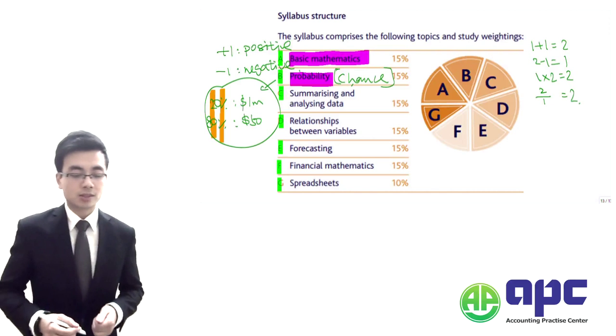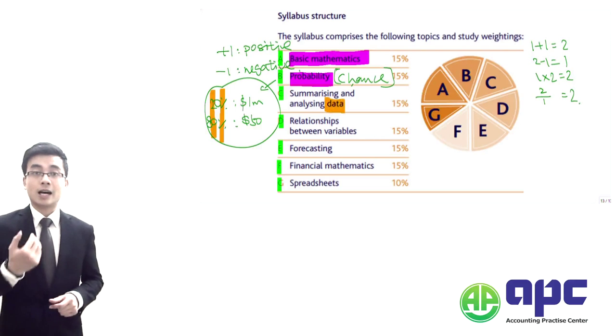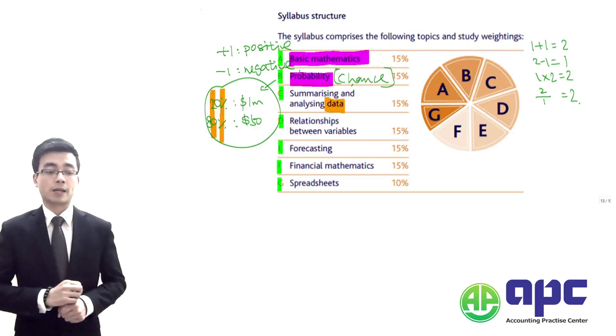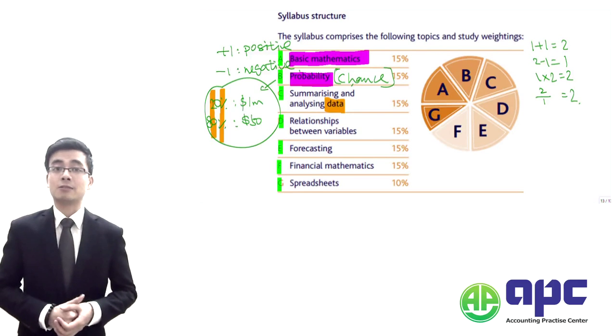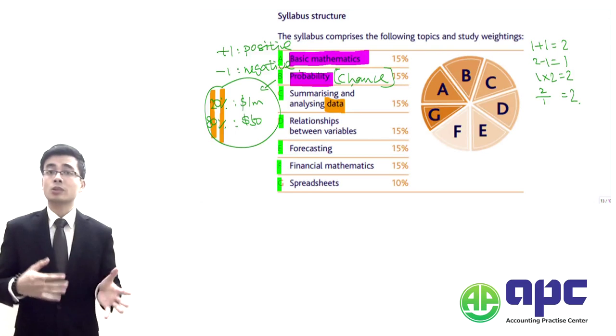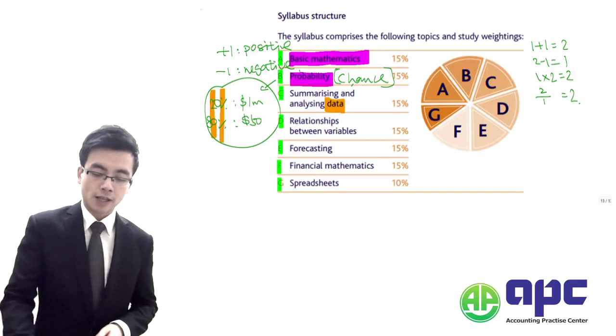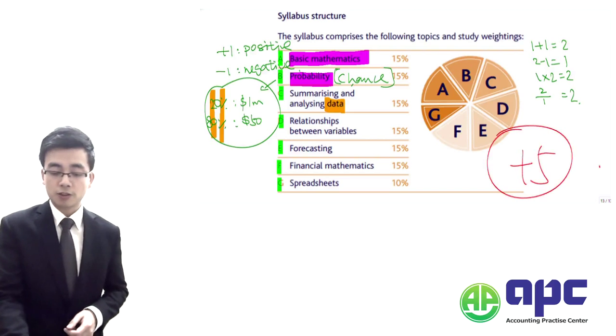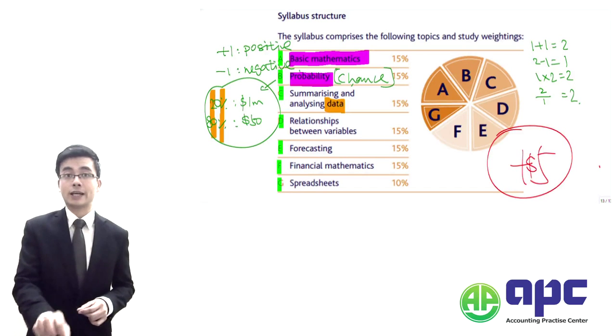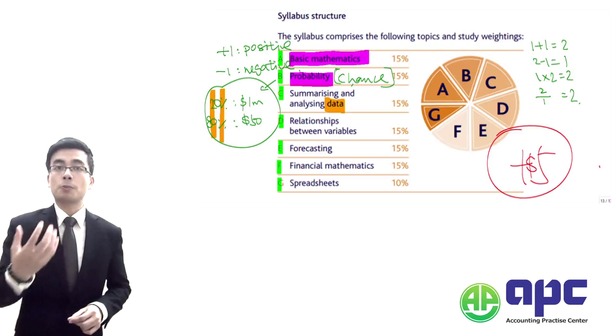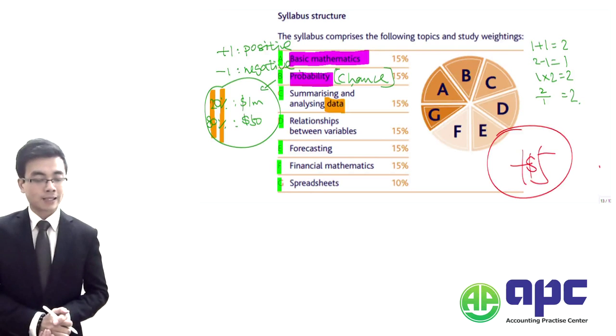We then come to the section C of our syllabus, where we're going to summarize and analyze the data. But from the exam's perspective, very importantly, we need to know the difference between data and information. That's what the difference is between them. So firstly, data, for example, I give you a figure of +$5. What does that mean? It means nothing. So that's just to be the raw data.